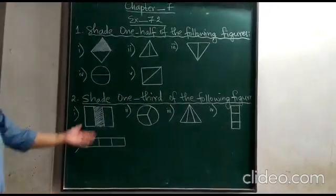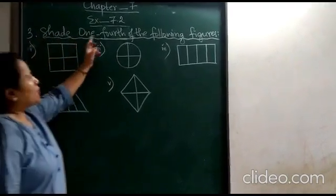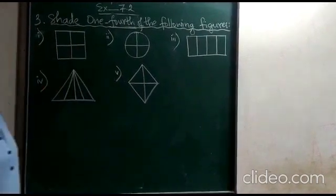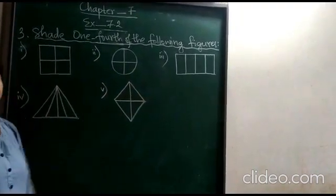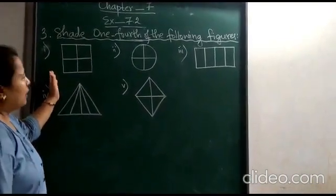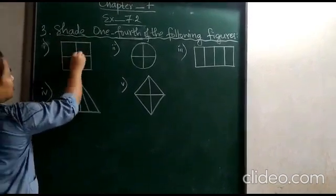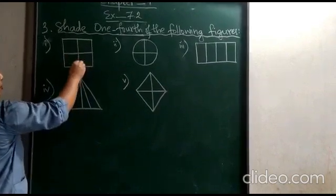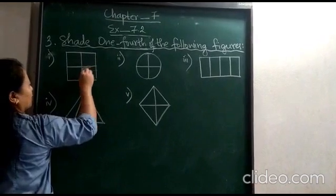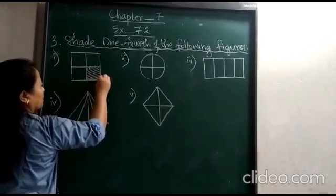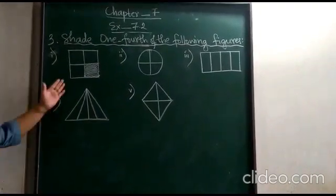Number three: shade one-fourth of the following figures. Again, five pictures are given. I will do number one for you, and two, three, four, five will be for your practice. This is a square shape. It is divided into four parts — one, two, three, four. You have to shade any one part. I will shade the bottom part for you. Done. This is one-fourth.